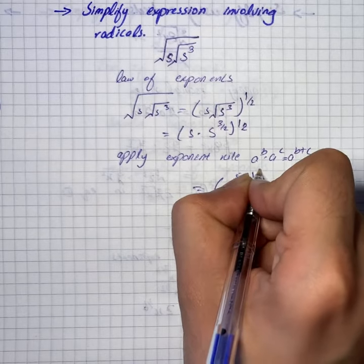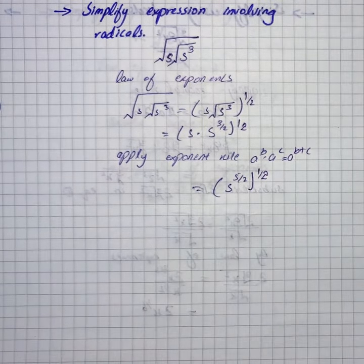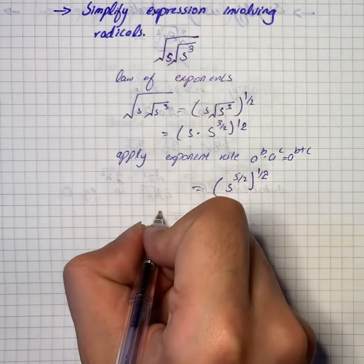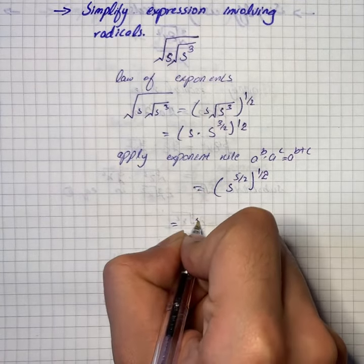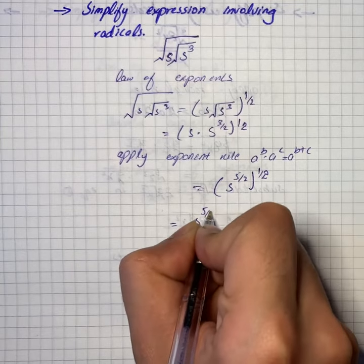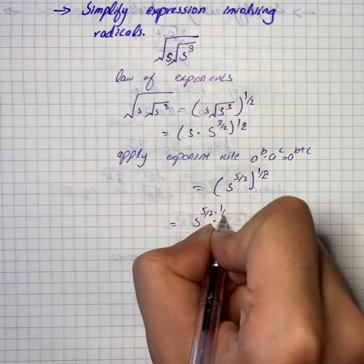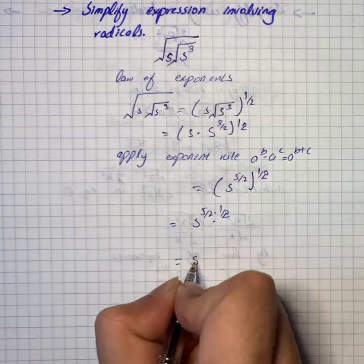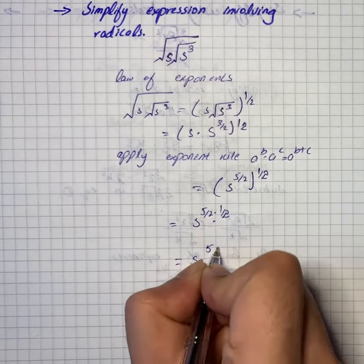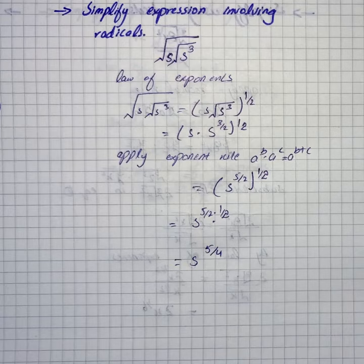We then apply the exponent rule: s raised to power 5/2 times 1/2, giving us s raised to the power 5/4. That is the simplified form of the given expression.